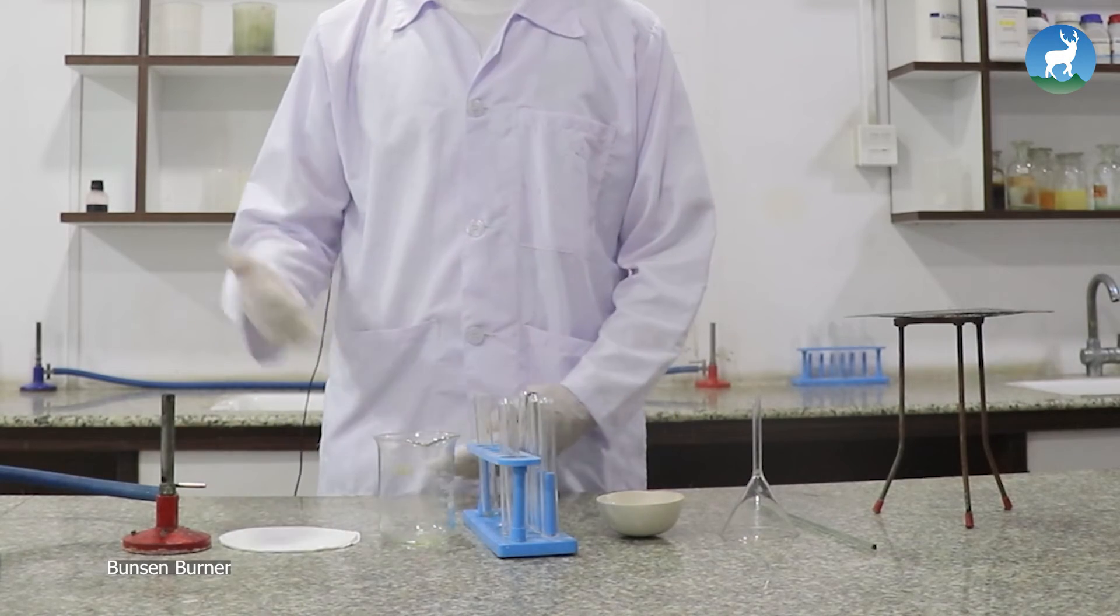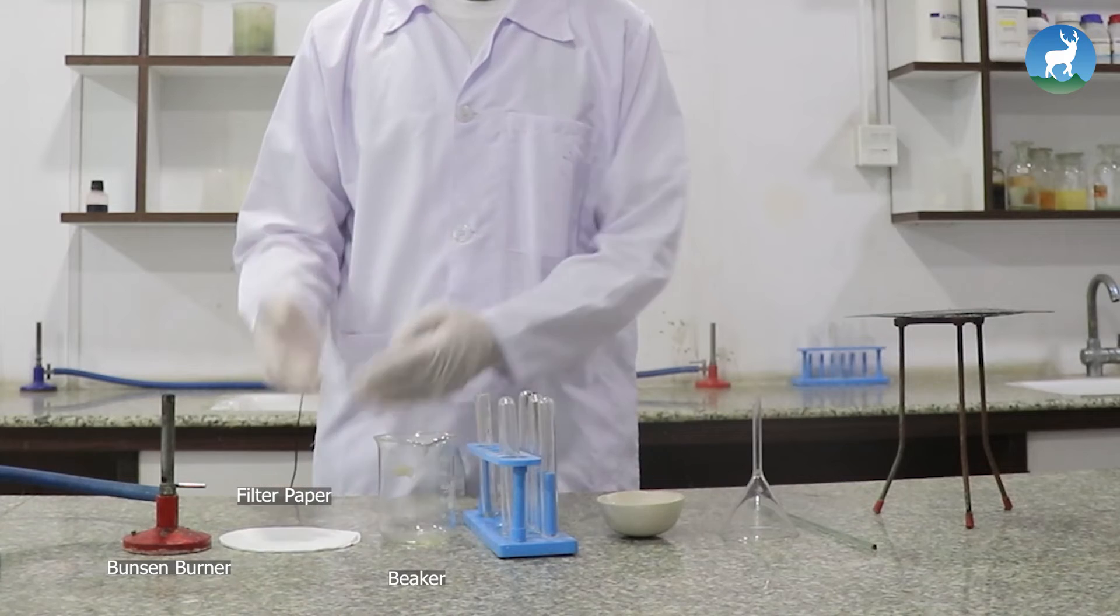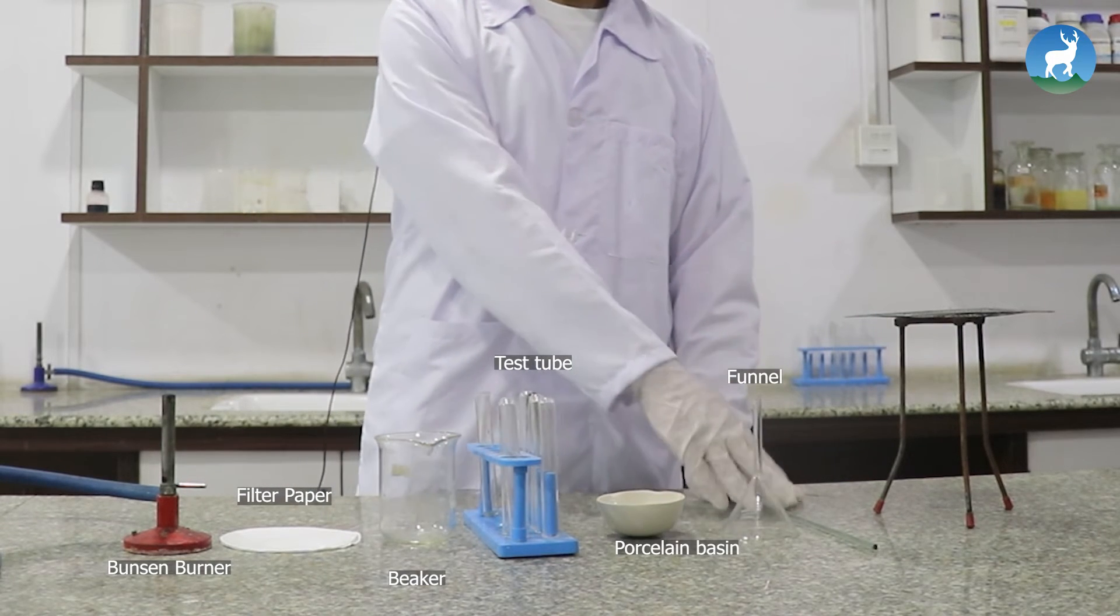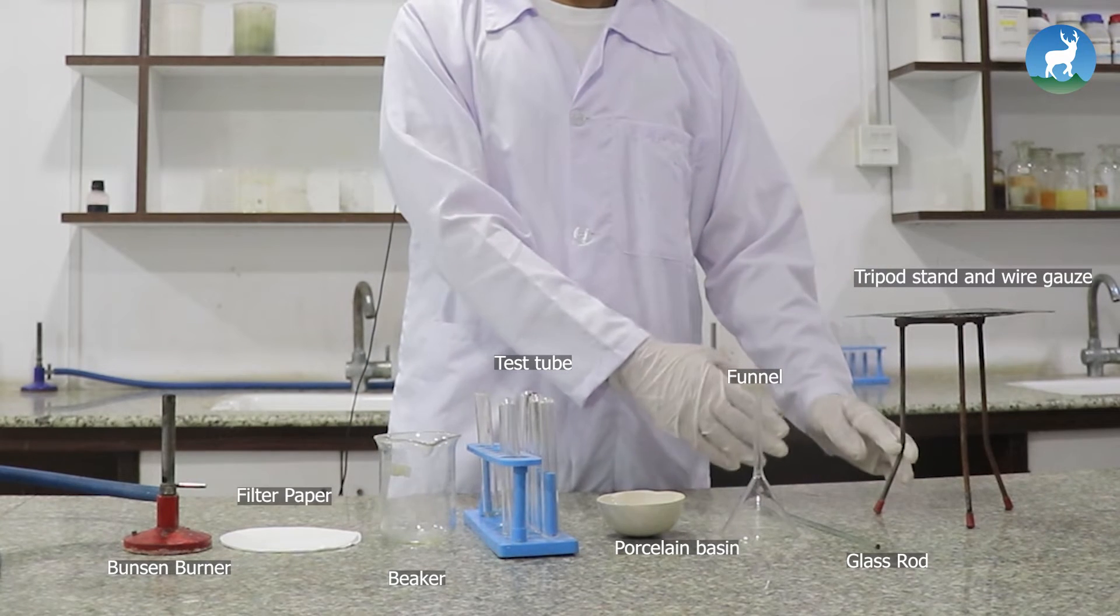Apparatus required are Bunsen burner, filter paper, beaker, test tube, porcelain basin, funnel, glass rod, wire gauge, and tripod stand.